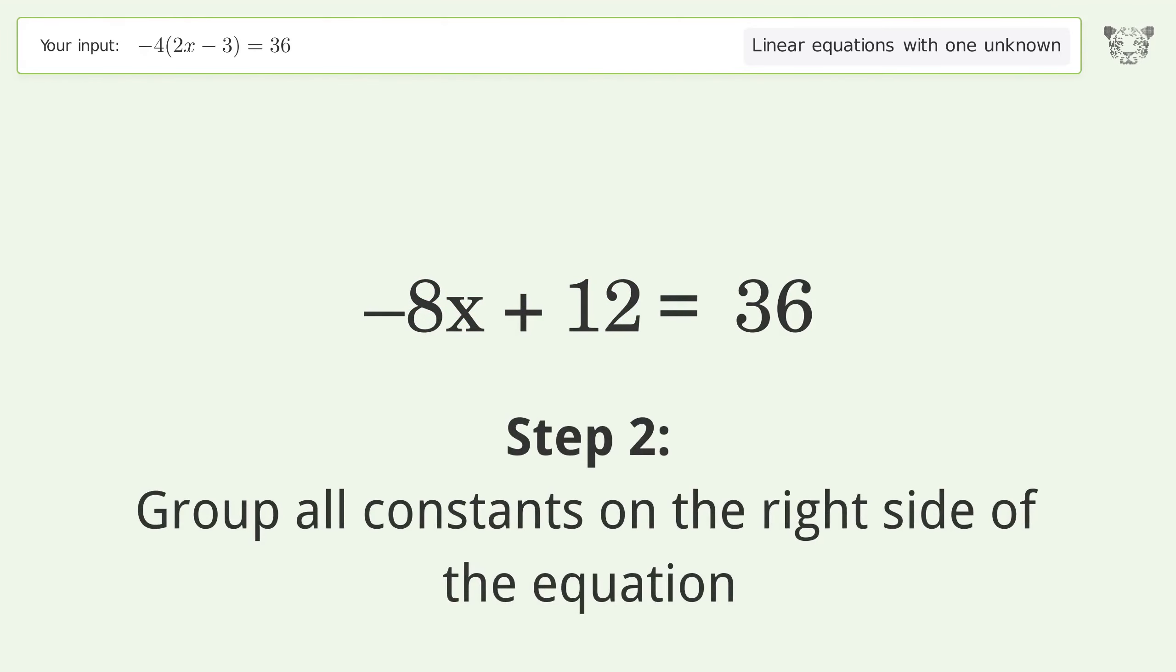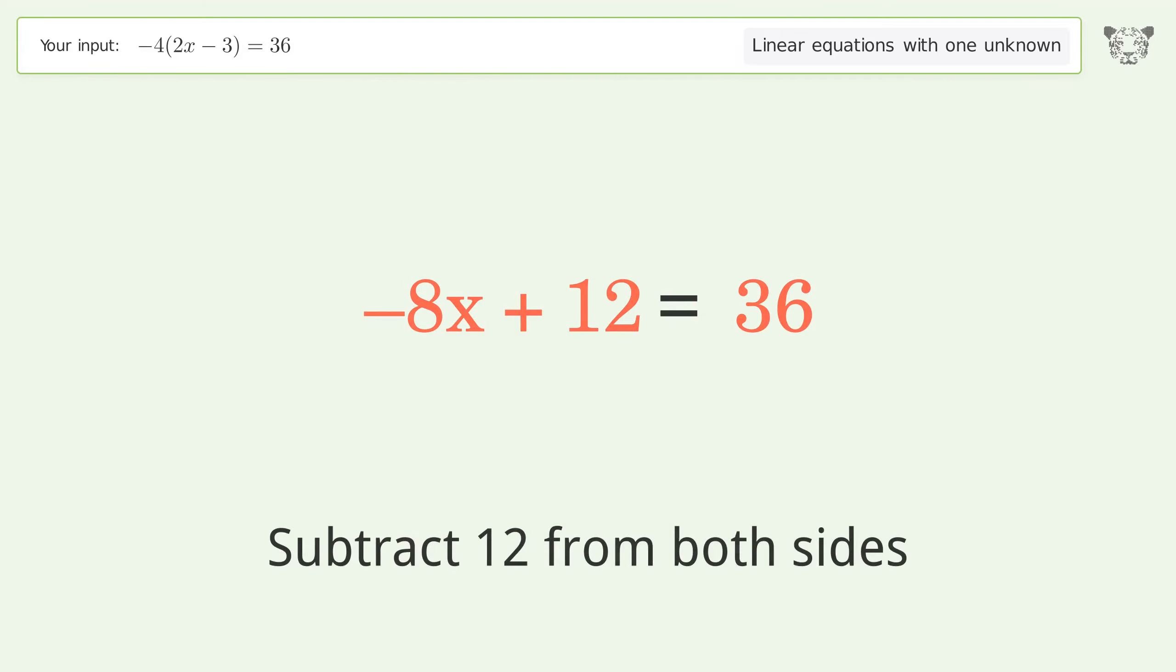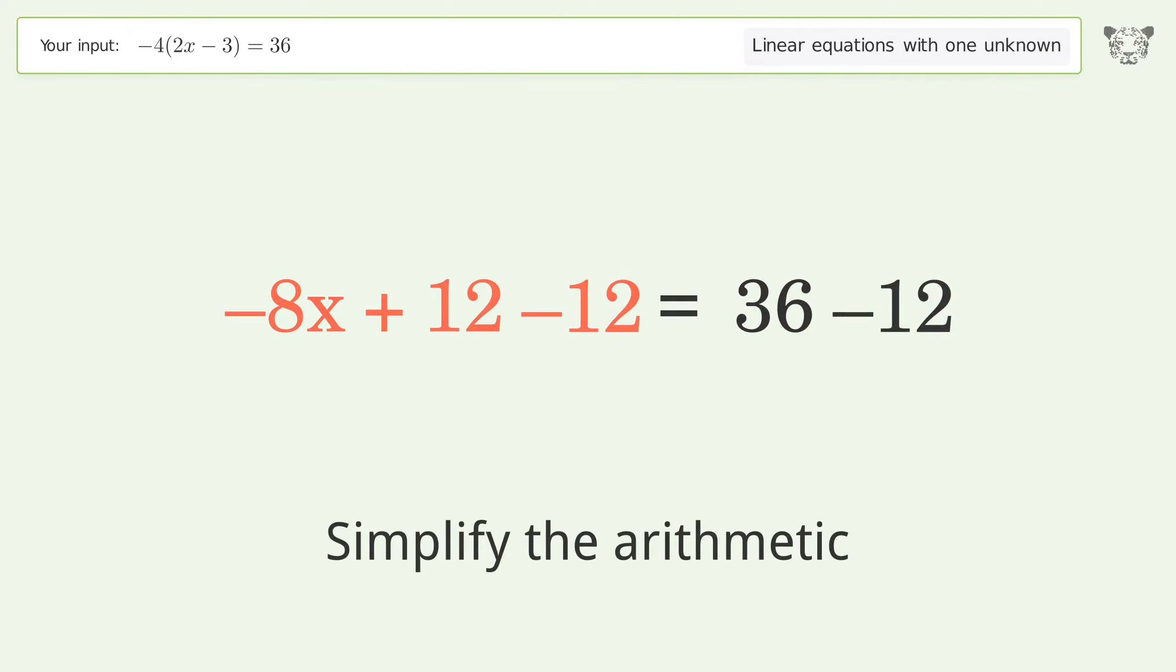Step 2: Group all constants on the right side of the equation. Subtract 12 from both sides. Simplify the arithmetic to get -8x = 24.